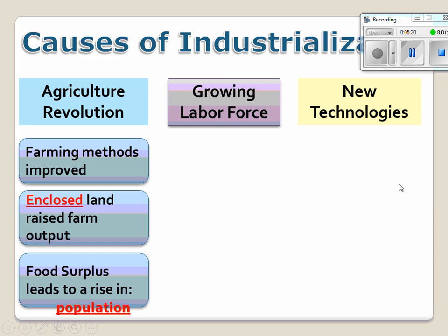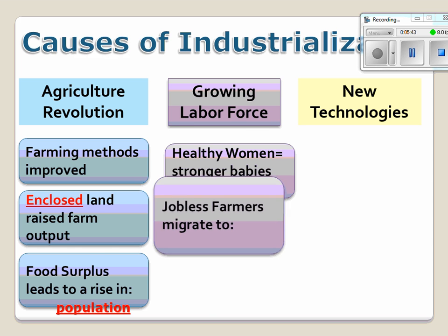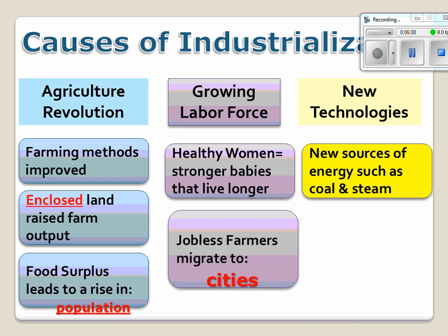Thanks, Mr. Mardone. When the surplus of food comes, it comes with the growth of a labor force. Women were living long and healthy lives and gave birth to children who lived longer and better lives. Jobless farmers migrated to cities. Cities will be at the epicenter of the Industrial Revolution and play a vital role in the revolution itself. With the strong concentration of people, ideas slowly became real. New technologies such as coal and steam came into reality.